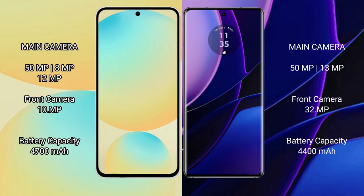Samsung Galaxy S24 FE features a triple camera setup with 50MP, 8MP, and 12MP lenses, and a 10MP front camera. Motorola Edge has a dual camera setup with 50MP and 13MP rear cameras, and a 32MP front camera.